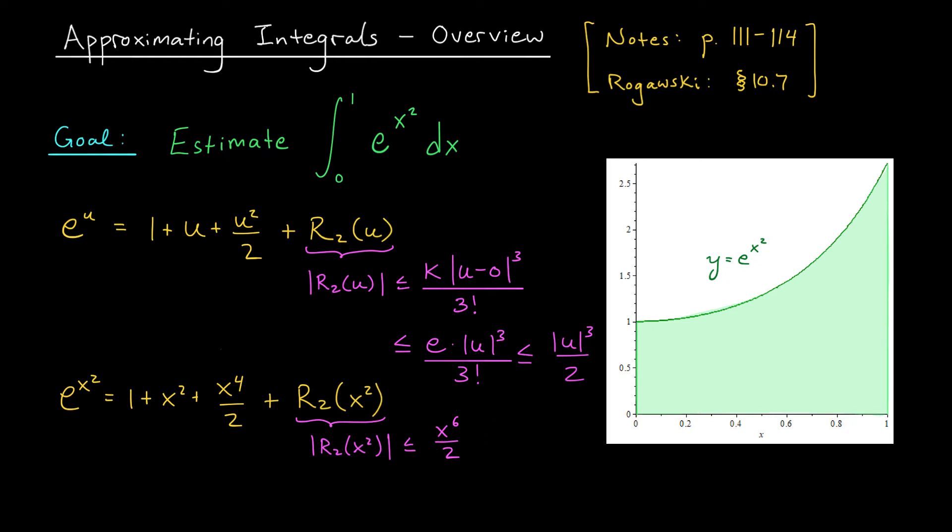This means that for all x values between 0 and 1, where we've made our error approximation, e to the x squared is always sandwiched between two other functions. It's always bigger than what you would get if you subtracted this maximum error term. It's always bigger than 1 plus x squared plus x to the 4 over 2 minus x to the 6 over 2. And it's always smaller than what you would get by adding this maximum error term. It's always smaller than 1 plus x squared plus x to the 4 over 2 plus x to the 6 over 2. Knowing that this function is always squished between these two polynomials will allow us to get some nice bounds on the value of this integral.